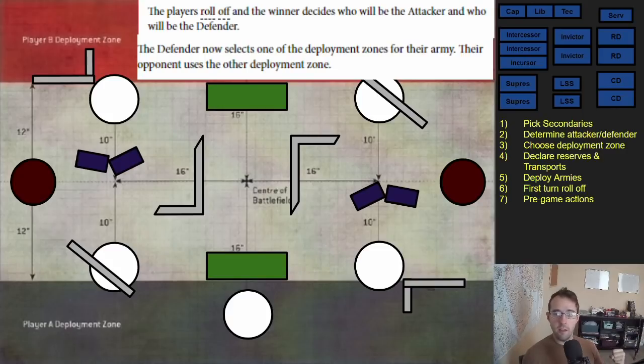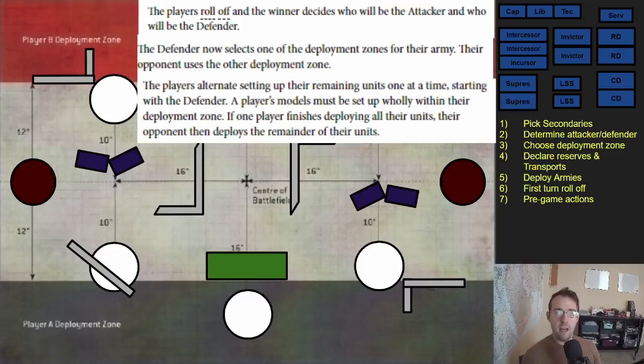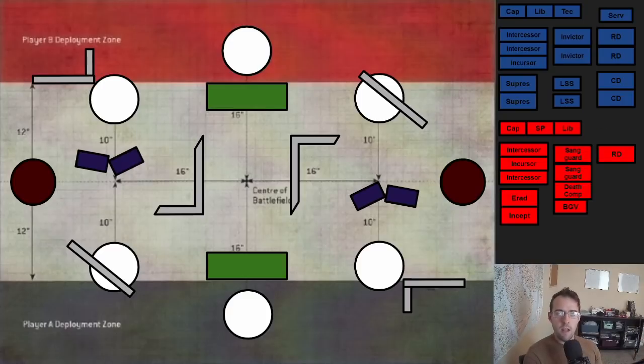The defender chooses their deployment zone and both players at the same time will declare their reserve or transports. So before you start deploying anything, you have to say all your guys are going to be in strategic reserve, transports, or deep strike. And then after that, the defender will start by placing their model on the board and they'll alternate with the attacker, each placing one unit on the board at a time. Both players will roll off and the winner has to go first. After that, everyone is able to do their pre-game actions, starting with the active player or the player who's going first.